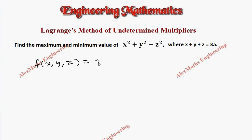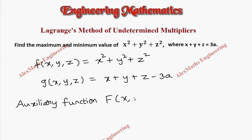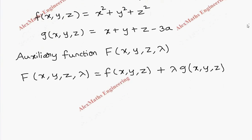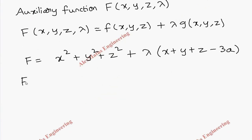So the function f(x, y, z) = x² + y² + z², and g(x, y, z) = x + y + z − 3a. We write the aggregate function, capital F(x, y, z, λ) = f(x, y, z) + λ · g(x, y, z), so capital F = x² + y² + z² + λ(x + y + z − 3a).